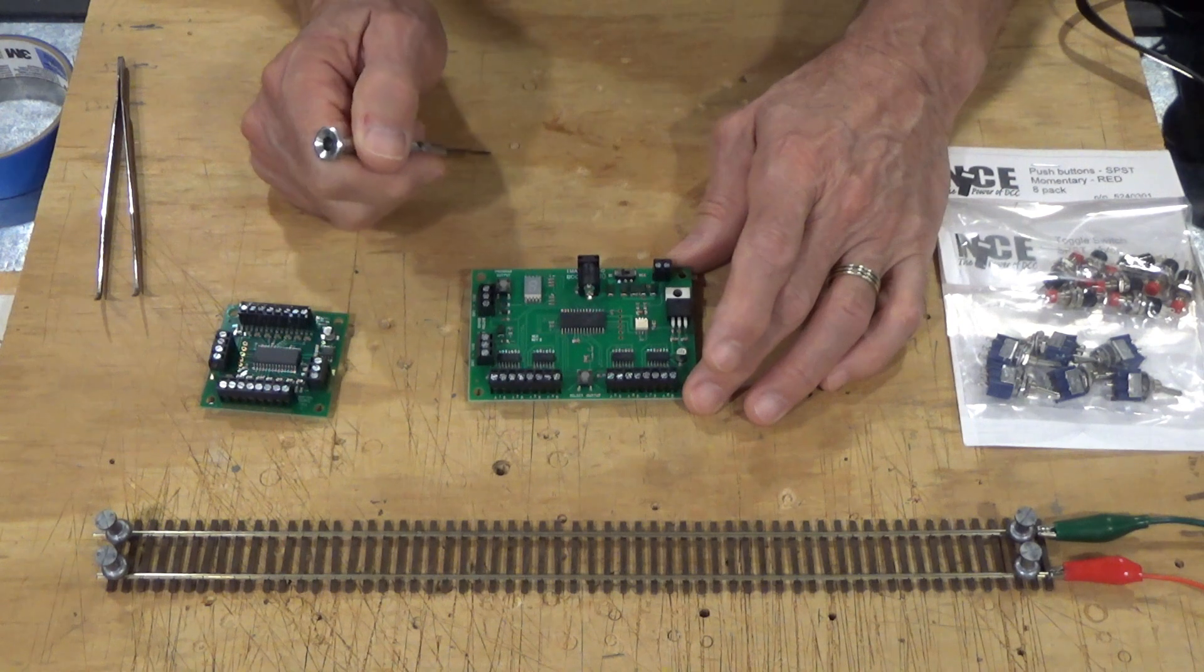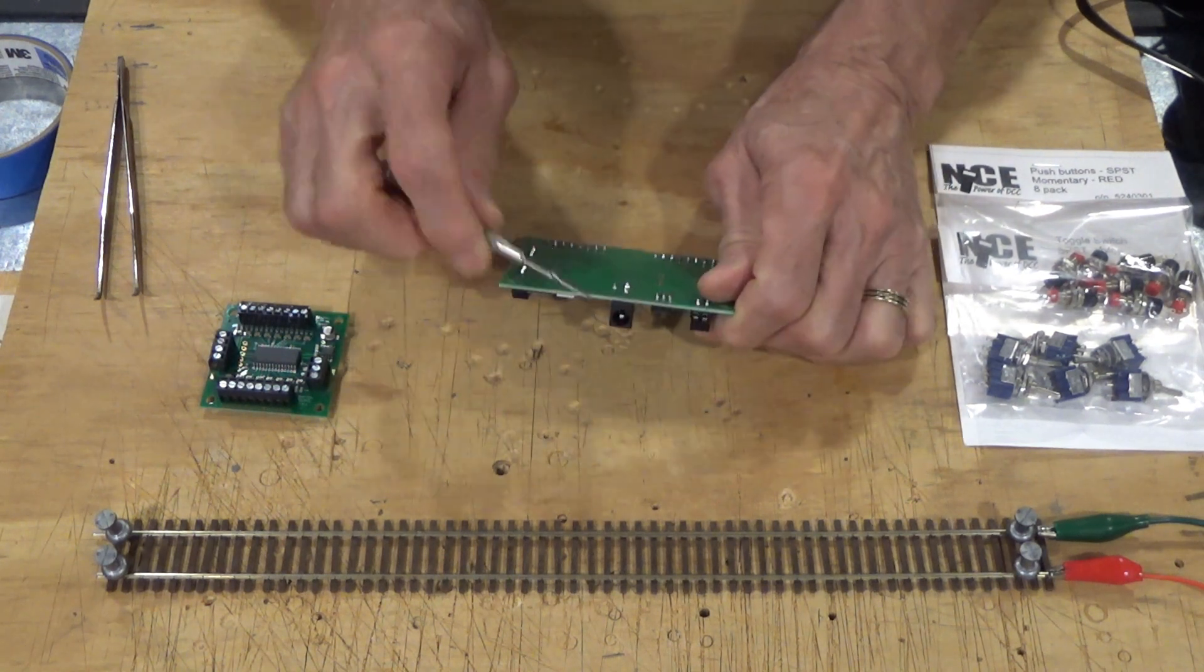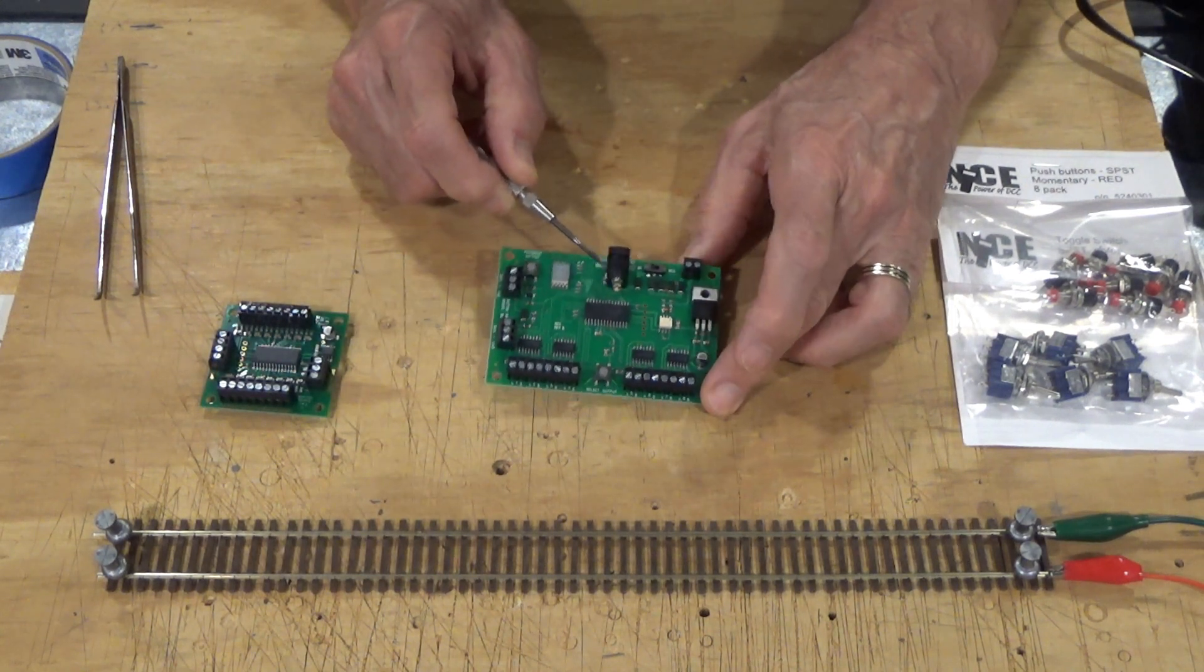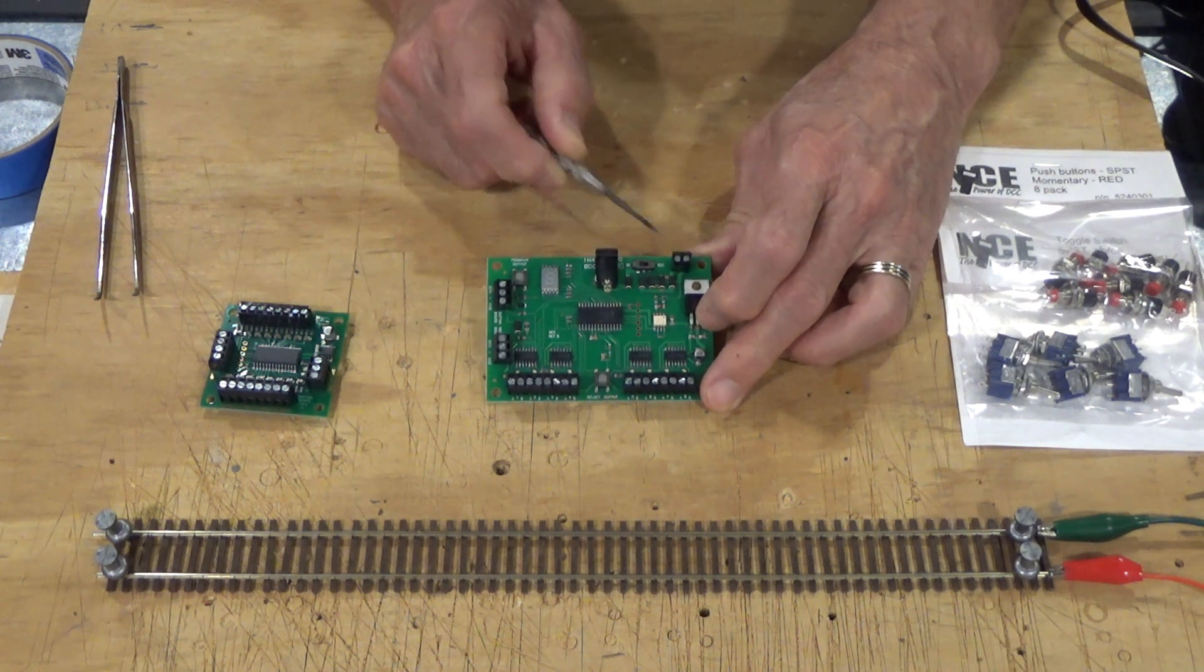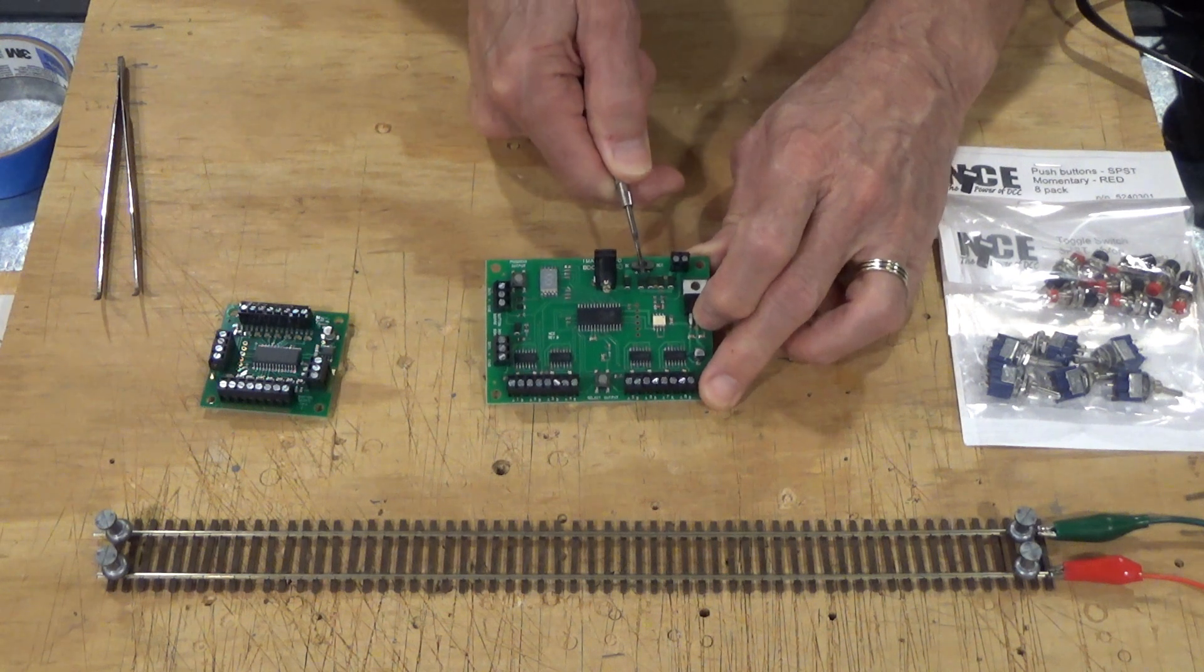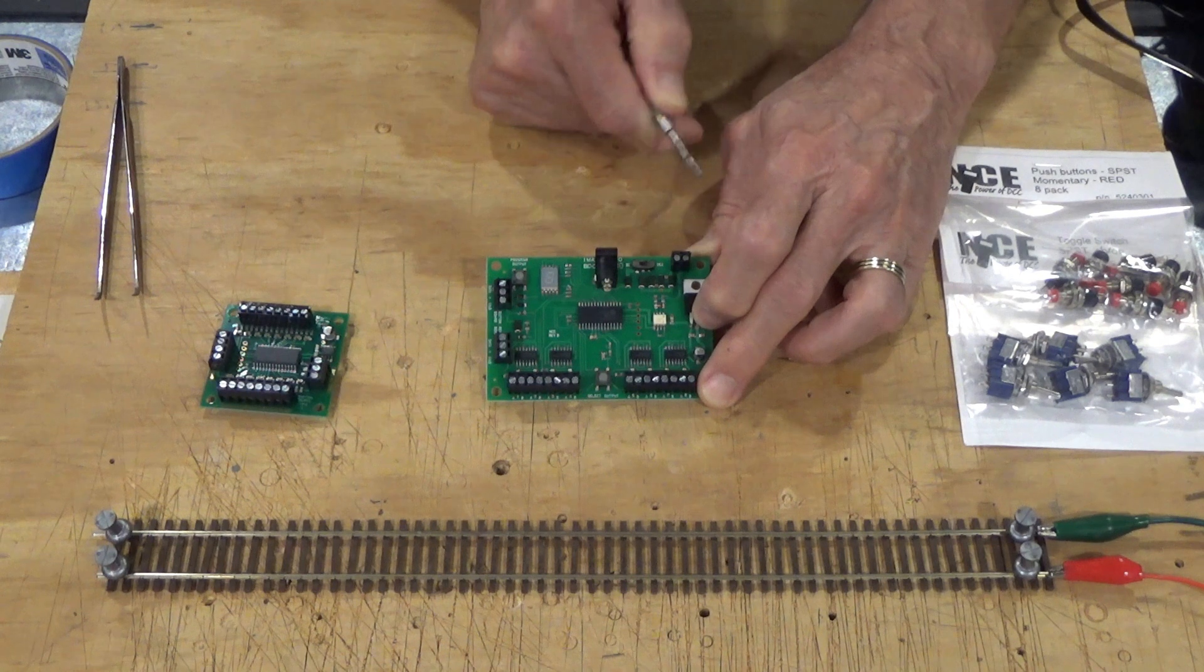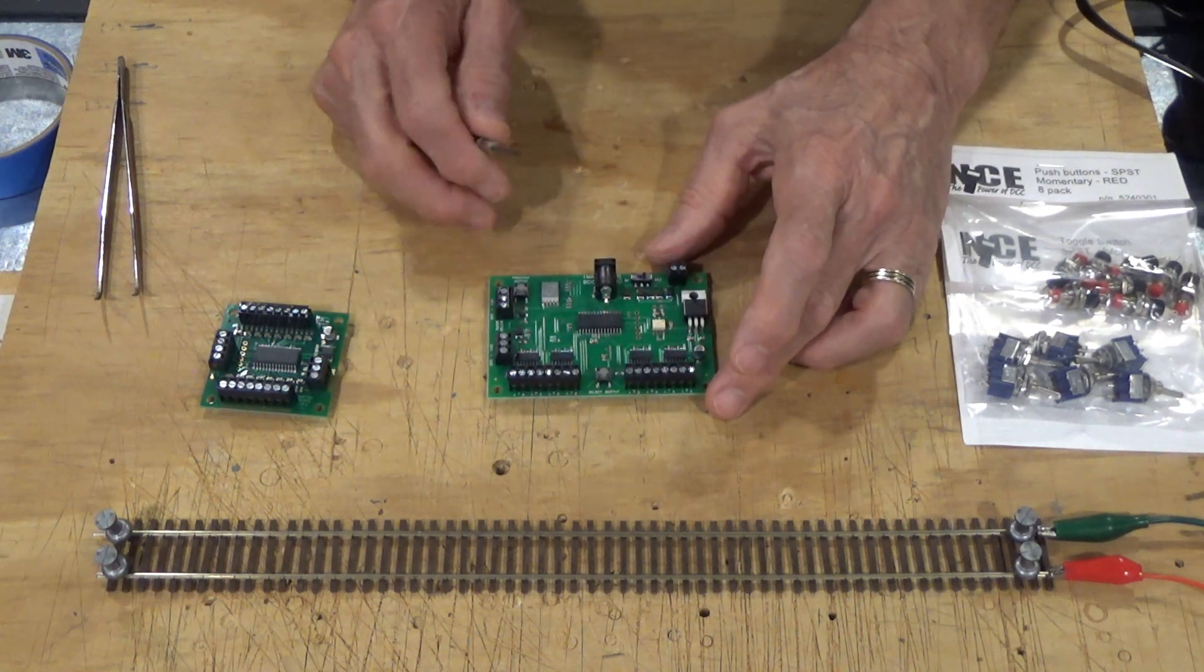Other things of interest on the board. We have here a barrel plug. You can see it plugs in right here. That's for the DC power input. And we have screw terminals here for the DCC input. And right here, there is a switch that selects between the DC and the DCC input power.